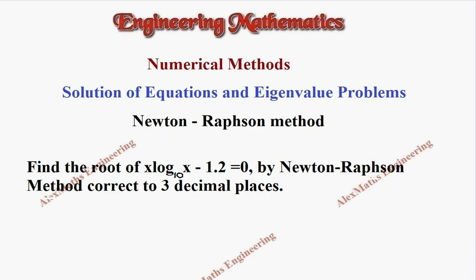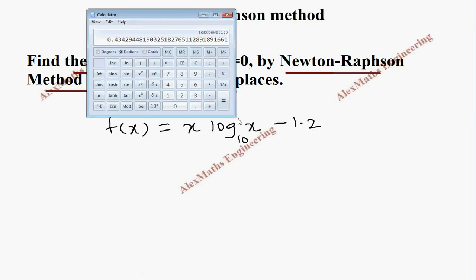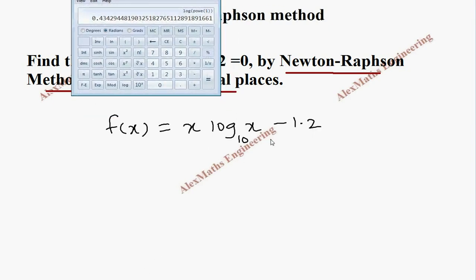Hi students, this is Alex. In this video we are going to find the root of x·log(x) base 10 minus 1.2 equal to 0 by Newton-Raphson's method, correcting to three decimal places. The first step is to write f(x), which equals x·log(x) base 10 minus 1.2.